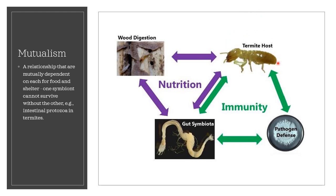The termites, also known as wood ants, eat wood to meet their nutritional demand. The wood contains 40 to 50 percent cellulose. Most multicellular organisms cannot digest cellulose on their own, and termites also cannot do this by themselves. Within the gut of termites are endo-symbiotic microbes — bacteria and protozoa.